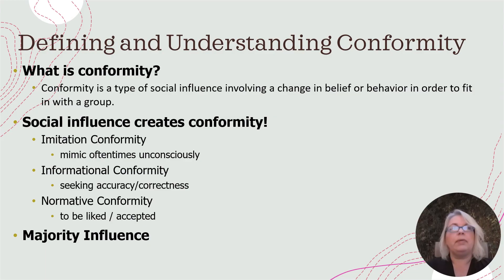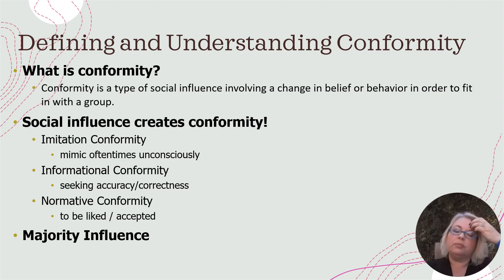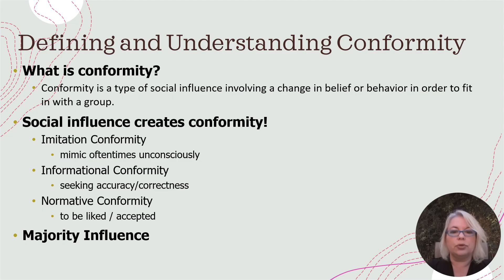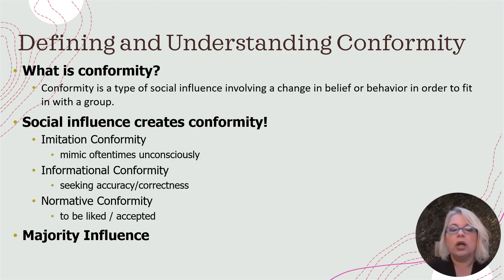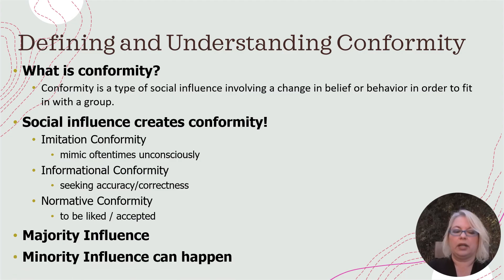There's a topic you've learned about this week: majority influence. What this focuses on is the fact that if several people in a space are conforming to something, we are much more likely to also conform — even if it isn't what would have come naturally to us, or even if we don't necessarily agree — especially if we're unsure. And the more consistent those people are, the more likely we are to conform.